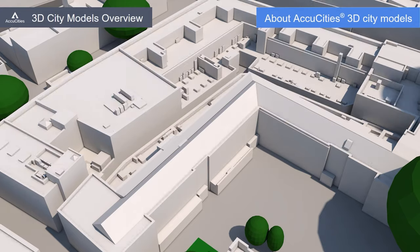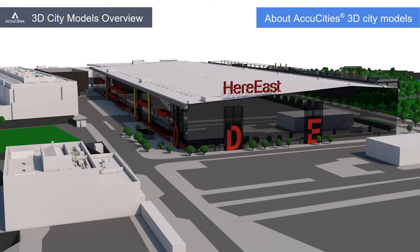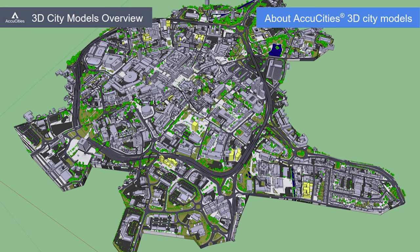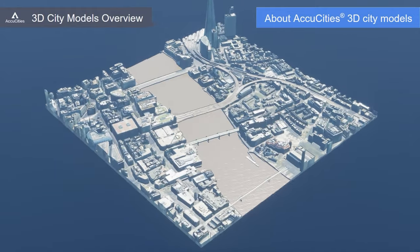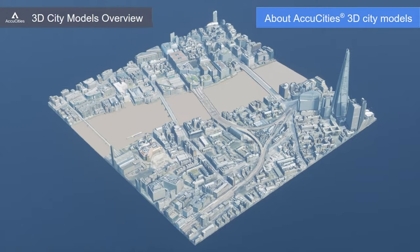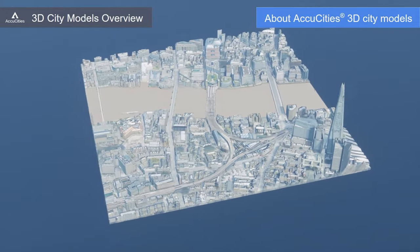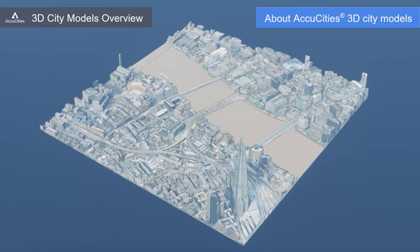Customers can choose a level of detail model and license to fit their needs. We supply our 3D models in CAD Solid, SketchUp or FBX formats as standard. Large sample models of an area of every city in our library are available, including a 1-square-kilometre sample of our latest 2021 textured 3D London model.